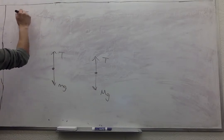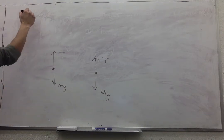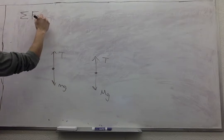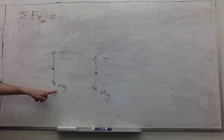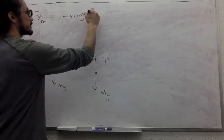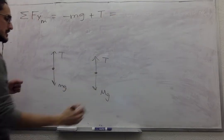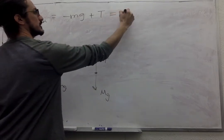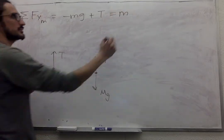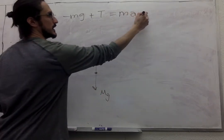So we only have to worry about the forces in the vertical direction. So sum of forces in Y for little M, you have minus mg plus tension equals mass, so little m, times acceleration, in this case the acceleration of little M.